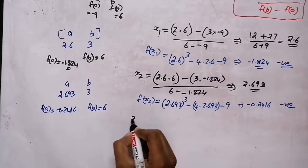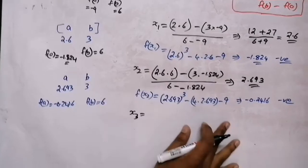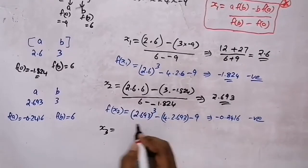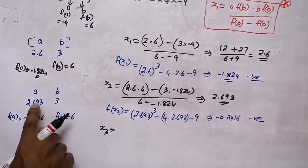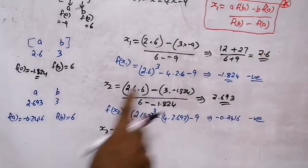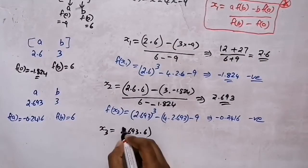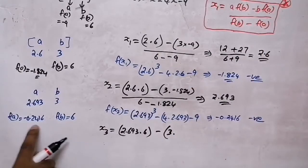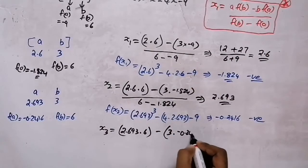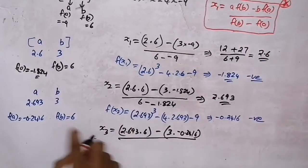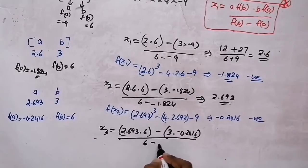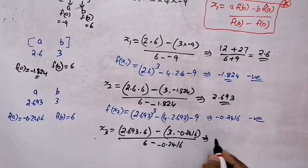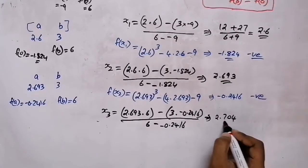Now we find x3 using the same formula with a = 2.693, f(b) = 6, b = 3, and f(a) = −0.2416. Substituting: [2.693 × 6 − 3 × (−0.2416)] / [6 − (−0.2416)] gives x3 = 2.704.